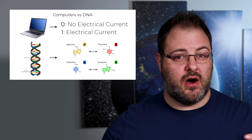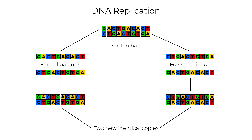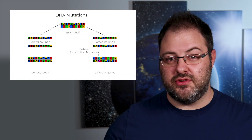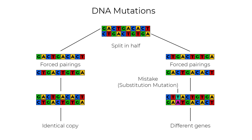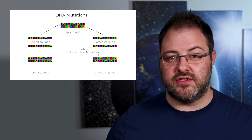A always pairs with T and C always pairs with G. Because of this, a strand of DNA can be split down the middle and two new strands of DNA can be reformed exactly like the original because of the forced pairings. However, nature is not perfect and sometimes mistakes are made when DNA is copied. These mistakes are what we call DNA mutations and they can result from deletions where one or more letters are left out, substitutions where letters are changed, or insertions where letters are added. DNA mutations are the main driving factor of evolution because without them, organisms wouldn't have changing traits over time.